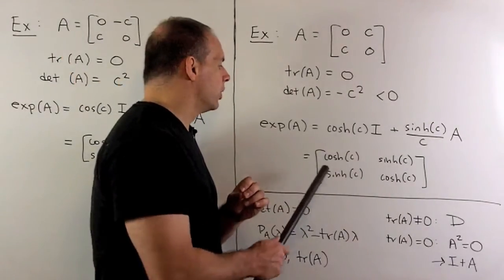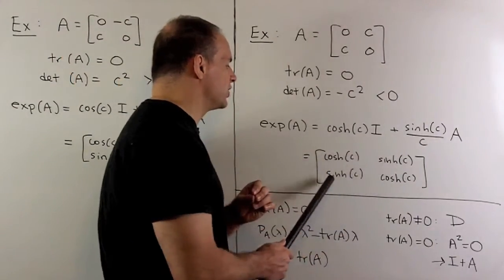Our final matrix says, cosh C, sinh C, sinh C, cosh C.